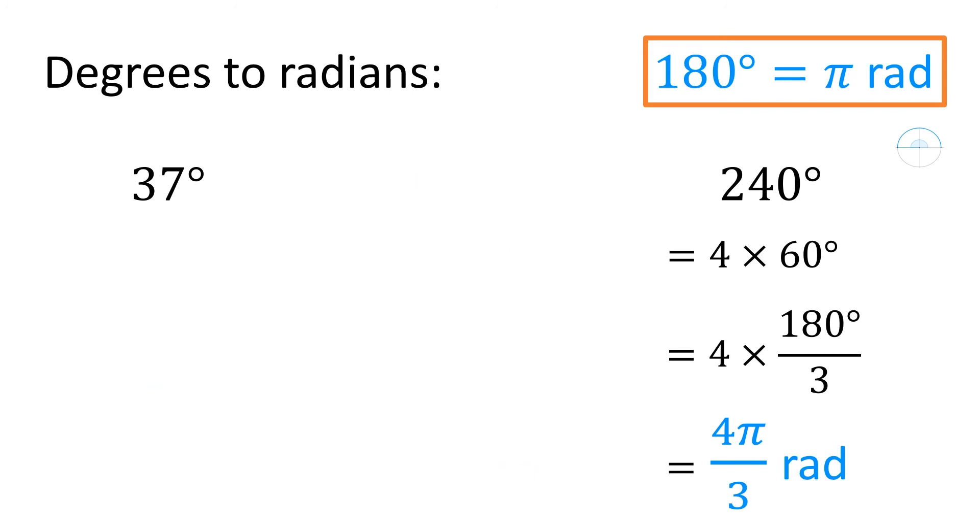If you had to calculate something like 37 degrees in radians, well, we need to know what fraction of 180 is 37. Well, it's 37 out of 180, so we have 37π/180 radians.